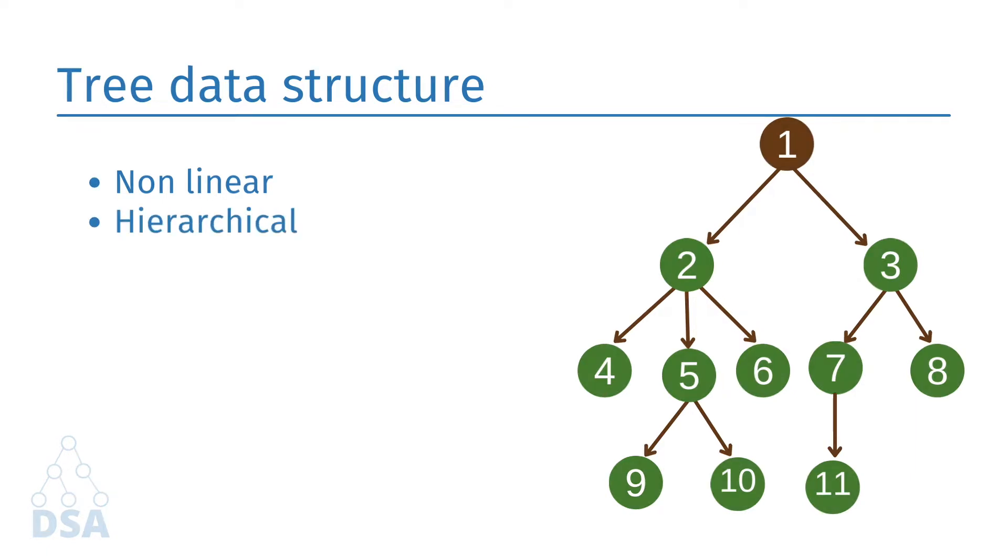It is a hierarchical structure as elements in a tree are arranged in multiple levels. Each node contains some data, and data can be of any type and contains a link or reference to other nodes which can be called children. We also saw some of the basic terms used to understand the tree data structure.